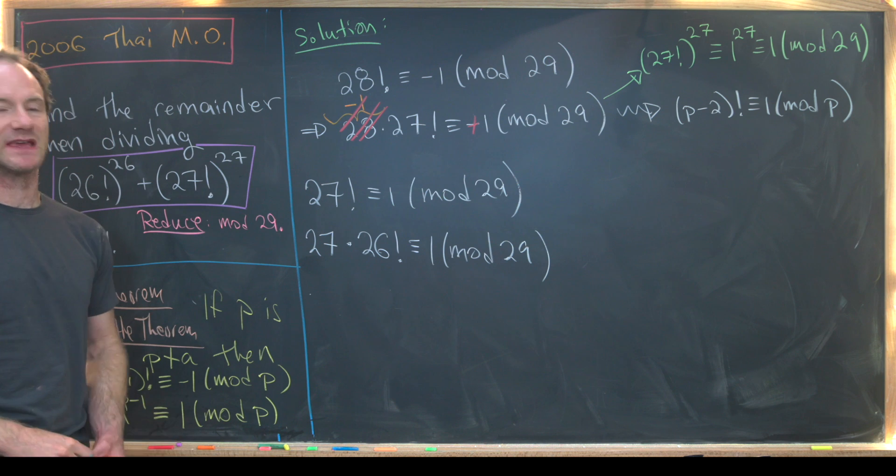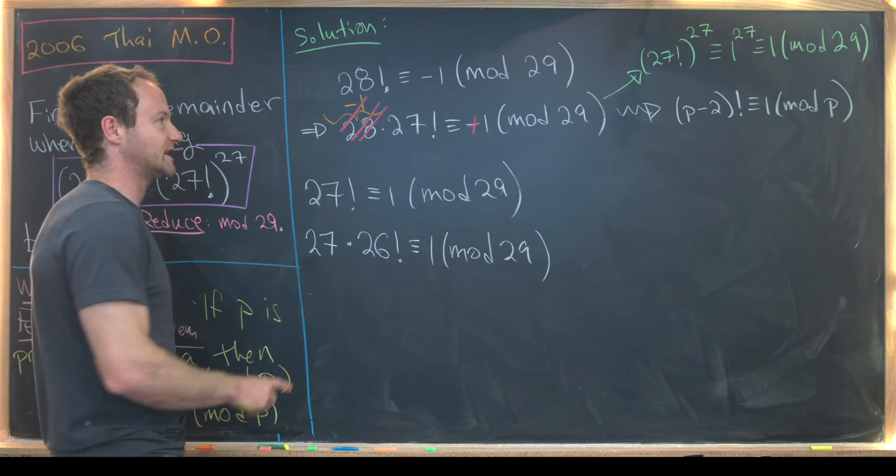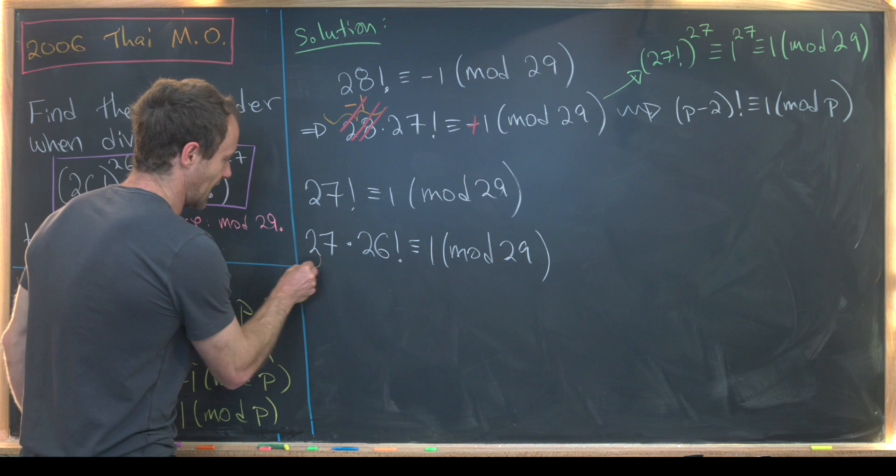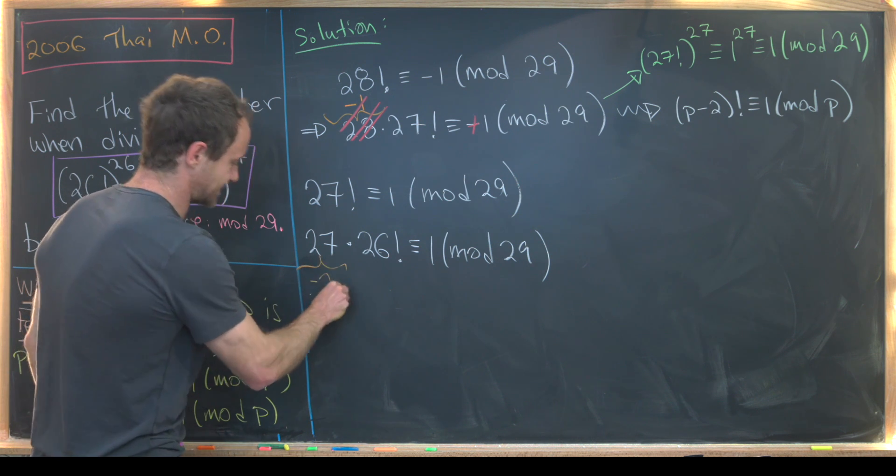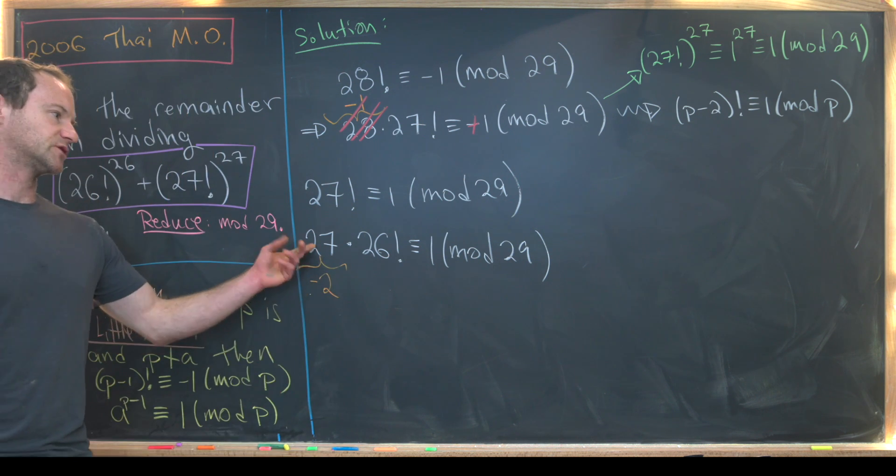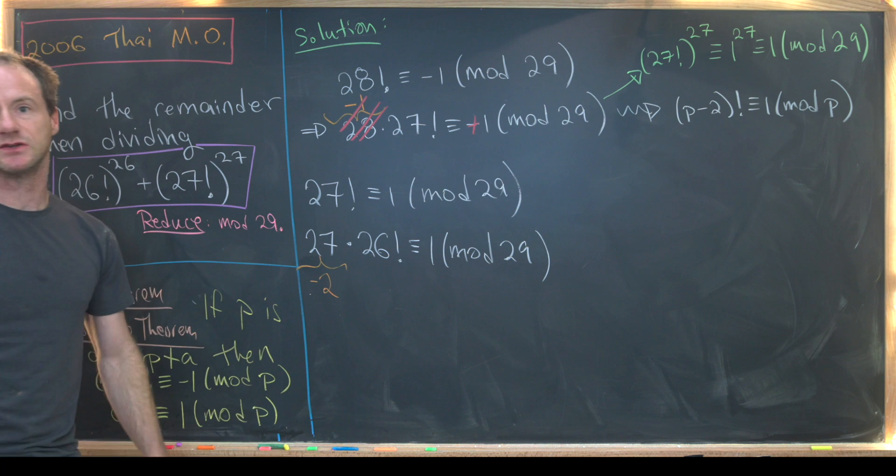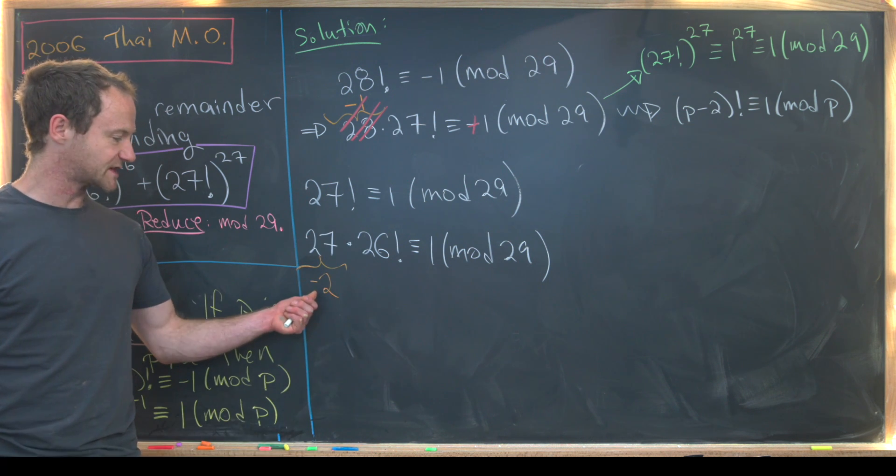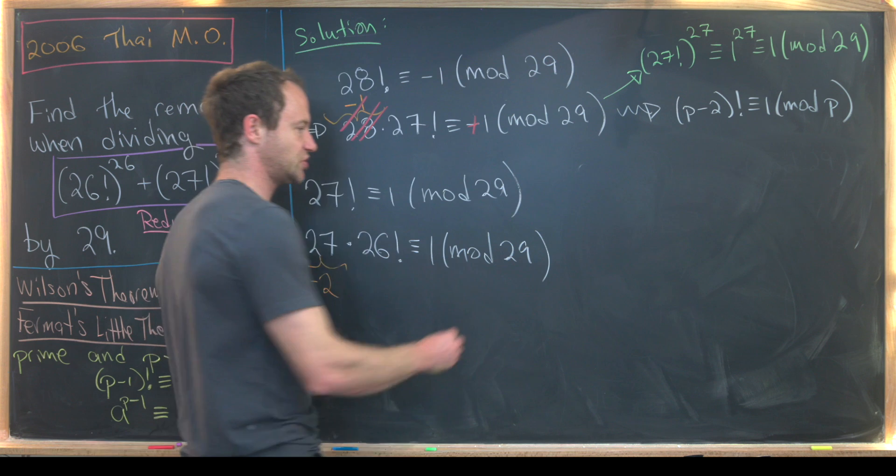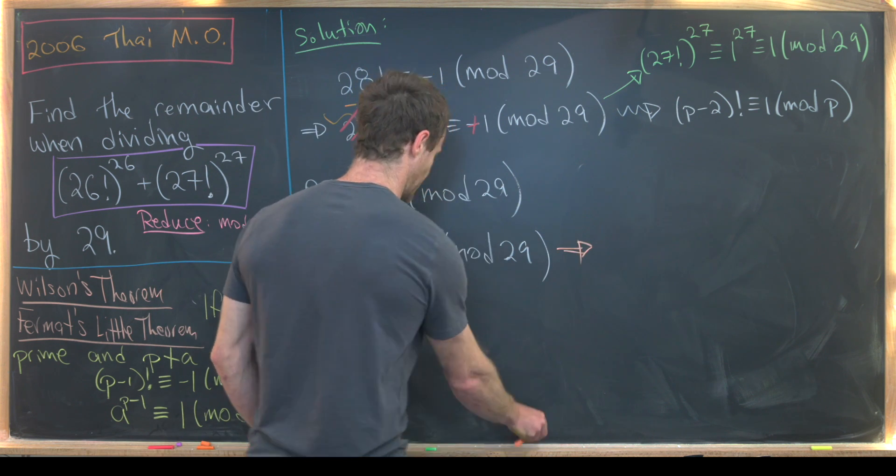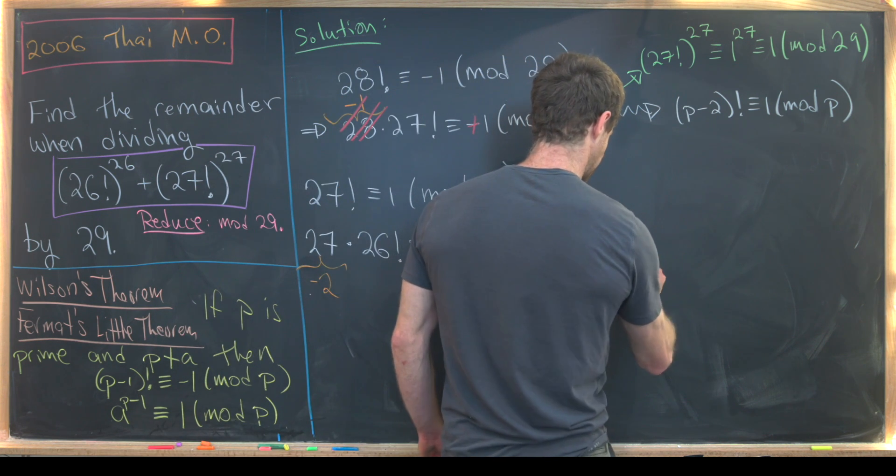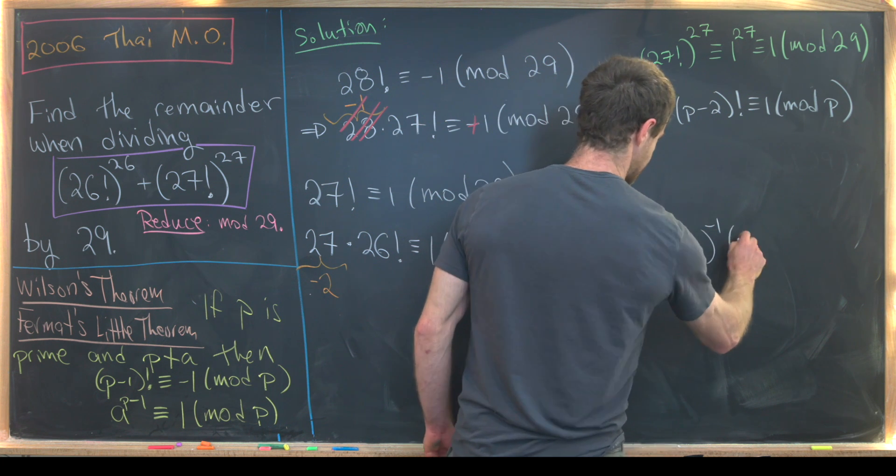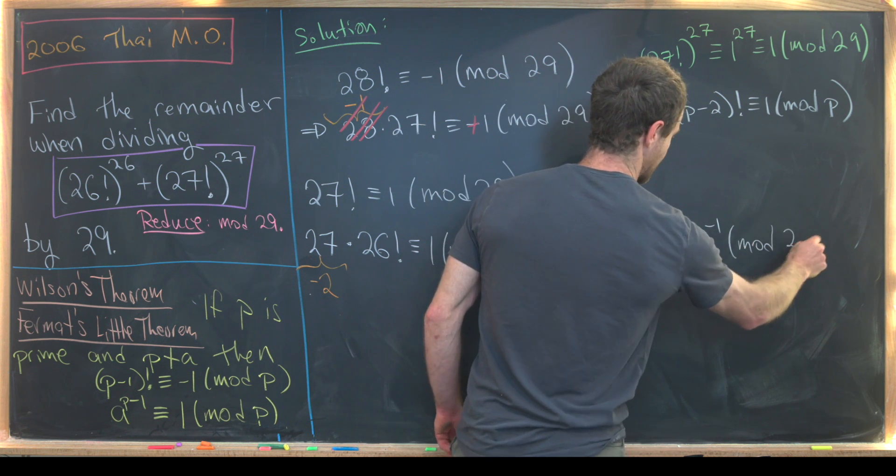Now we'll play this game again. So we can take this 27 and take a different residue class. And the residue class will be minus 2. Notice that 27 minus 29 is minus 2. So those are congruent mod 29. So now multiplying both sides of the congruence by minus 2 inverse will be left with the following congruence. We have 26 factorial is congruent to minus 2 inverse modulo 29.